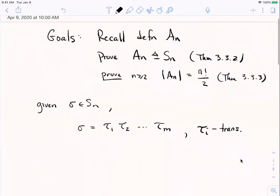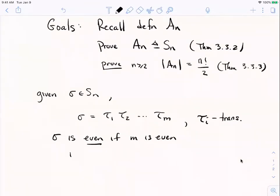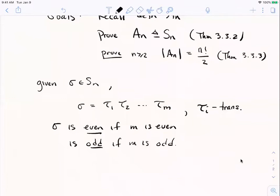And we say that sigma is even if m is even. And I'll say that sigma is odd if m is odd. The m itself is not unique. When somebody writes sigma as a product of transpositions, they might do it in a different number, but they never do it in a different number that has a different parity. So anytime somebody writes sigma as a product of transpositions, if they do it with an even number, anybody else could only do it with an even number.